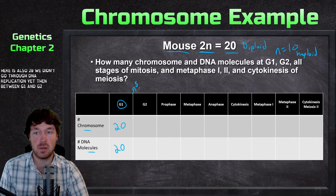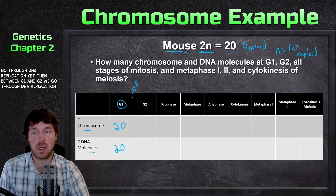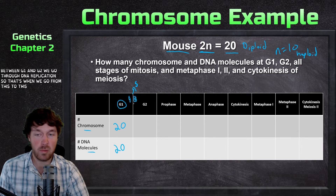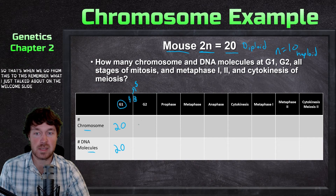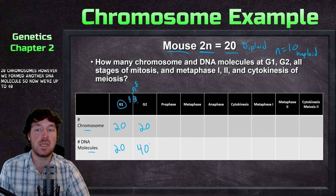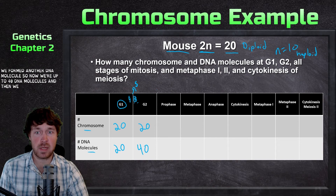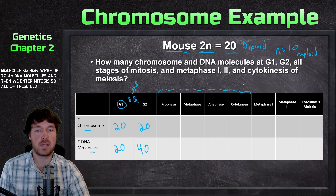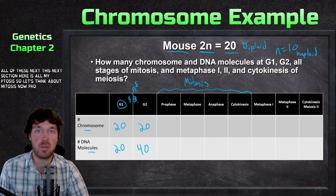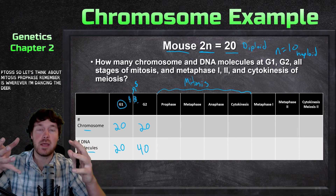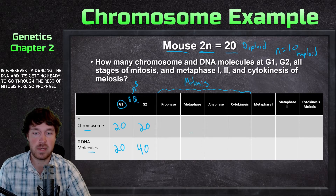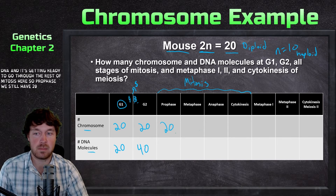Between G1 and G2 we go through DNA replication — that's when we go from one chromatid to two. Remember what I just talked about: this is still 20 chromosomes, however we formed another DNA molecule, so now we're up to 40 DNA molecules. Then we enter mitosis. Prophase is where we're condensing the DNA and getting ready to go through the rest of mitosis, so at prophase we still have 20 chromosomes.